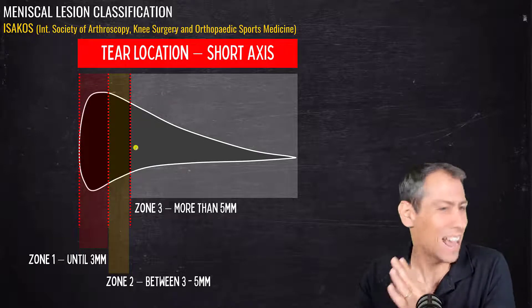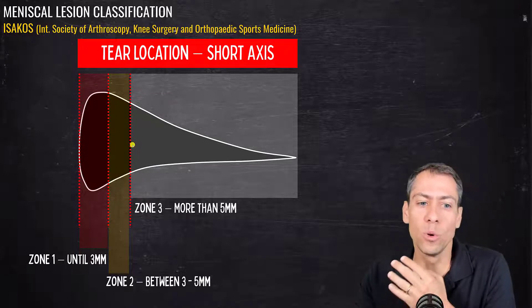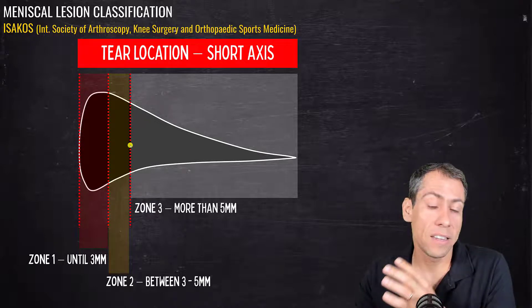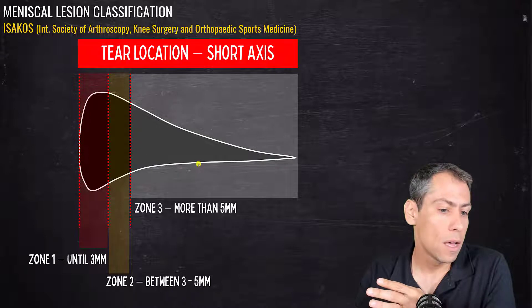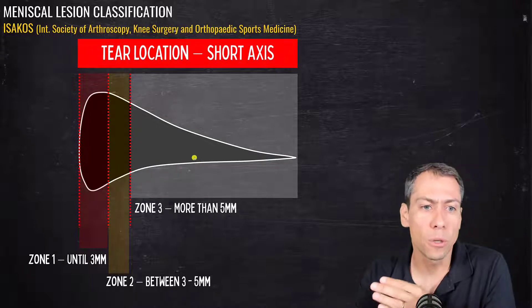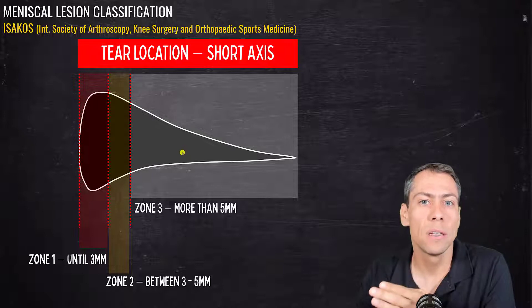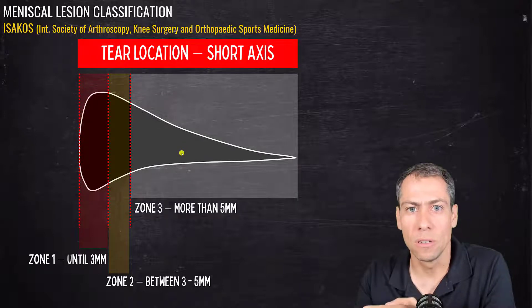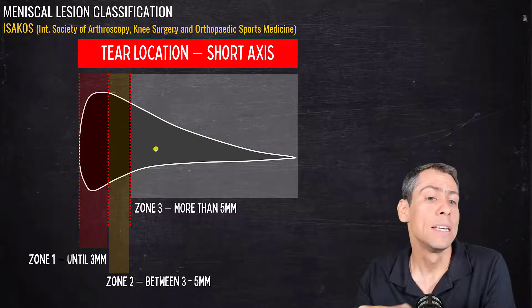That's why it's so important to describe exactly where the tear is located — it will help the orthopedic surgeon decide what treatment to use.